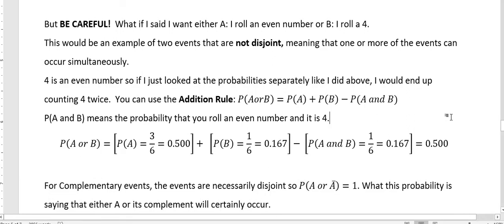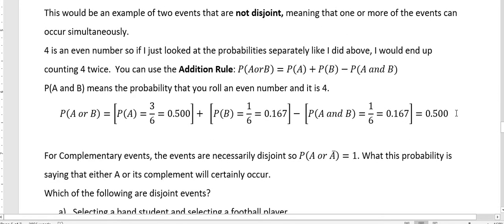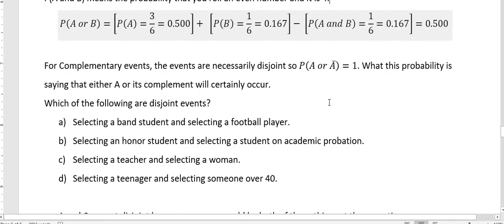So we really want to think about, is our event disjoint or not, before we start calculating the probability. For complementary events, the events are necessarily disjoint, because if event A happens, then we say the complement of A means that A is not happening. So when we look at the probability of A or complement of A happening, that probability is 1. That means that that probability is a certain event. Either A or not A is going to happen.